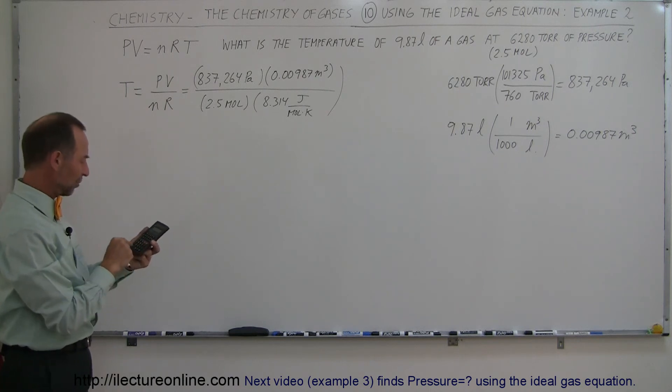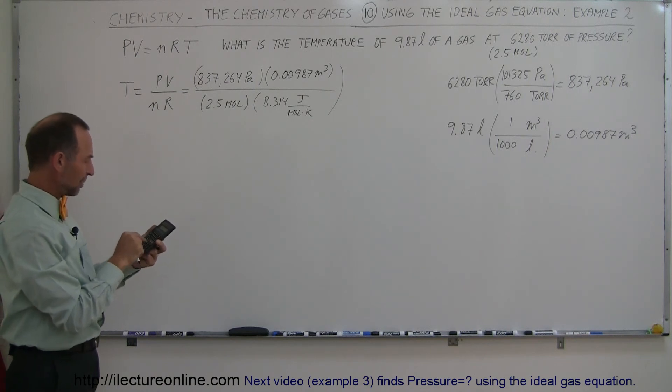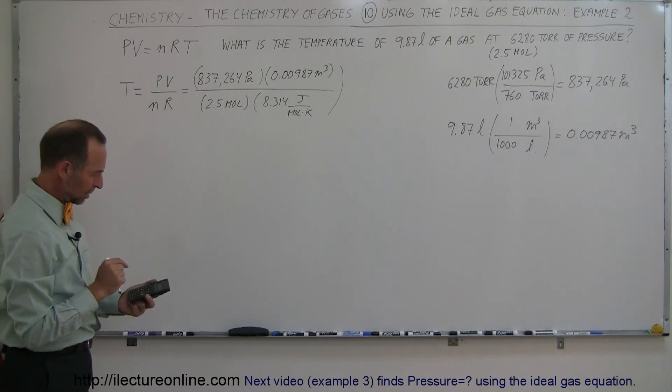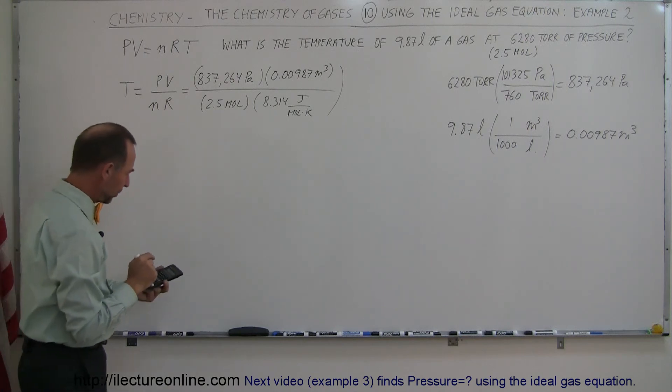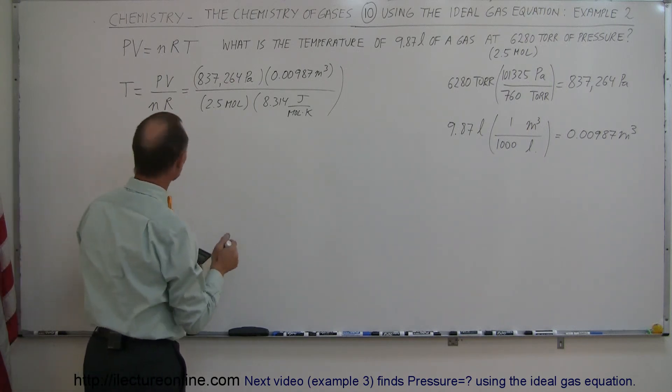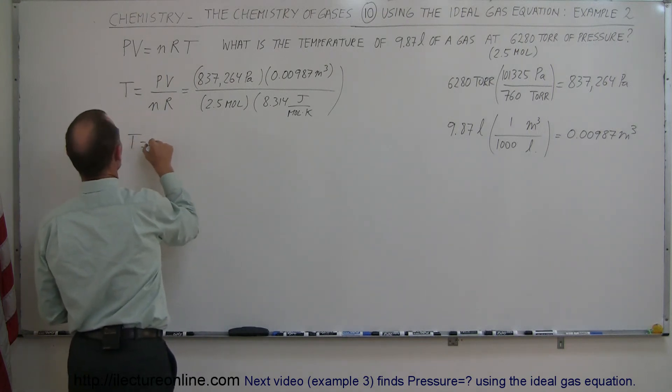So 837,264 times 0.00987 divided by 2.5 and divided by 8.314 equals, and we have a temperature of 397.6. So temperature is equal to 397.6 Kelvin, and that's how we do that.